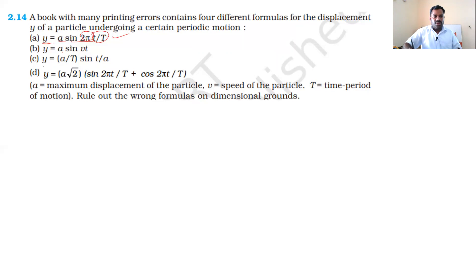For b, y equals a sin vt. If vt is dimensionless, then v must have dimension of 1/t, which is T to the power minus 1. The trigonometric function is dimensionless, so b is wrong.